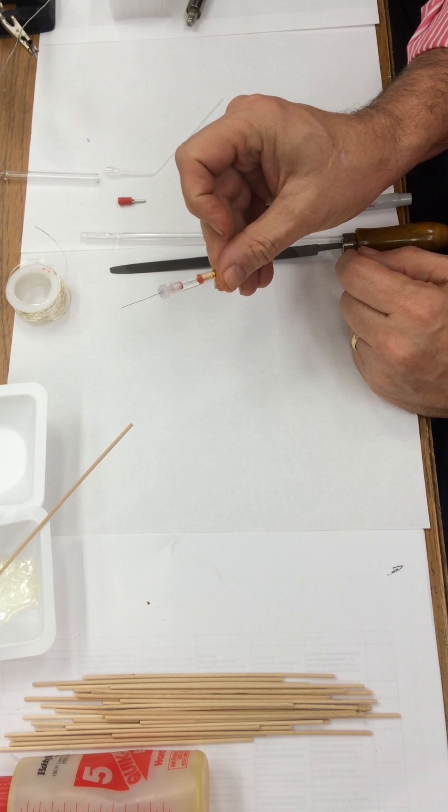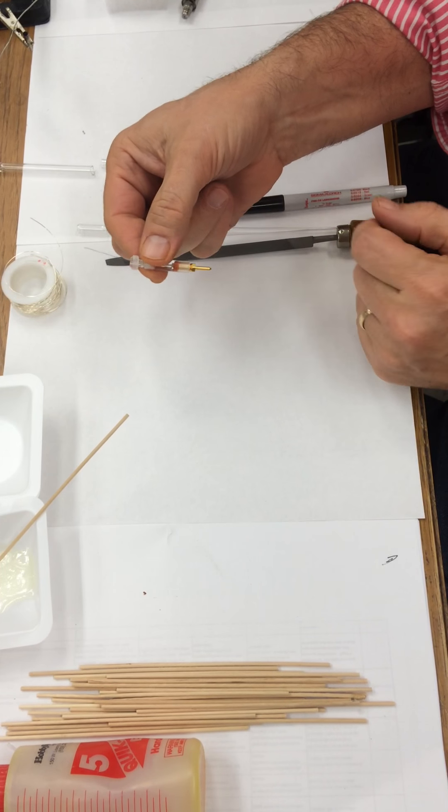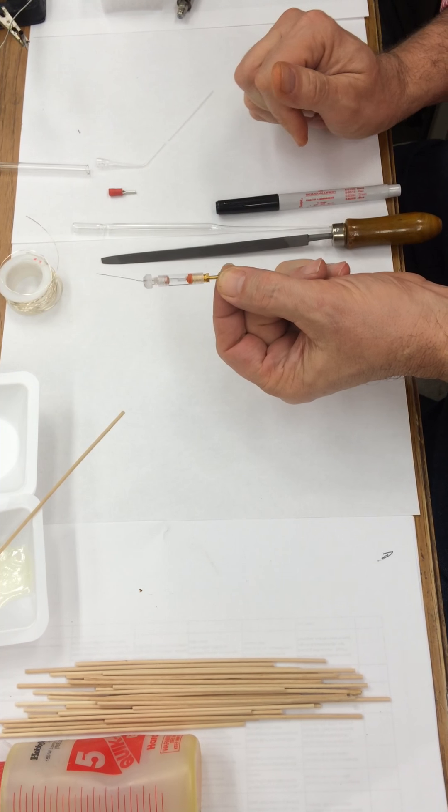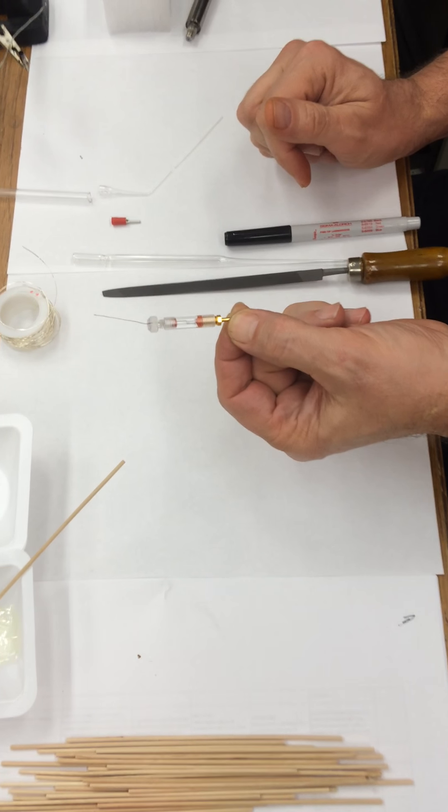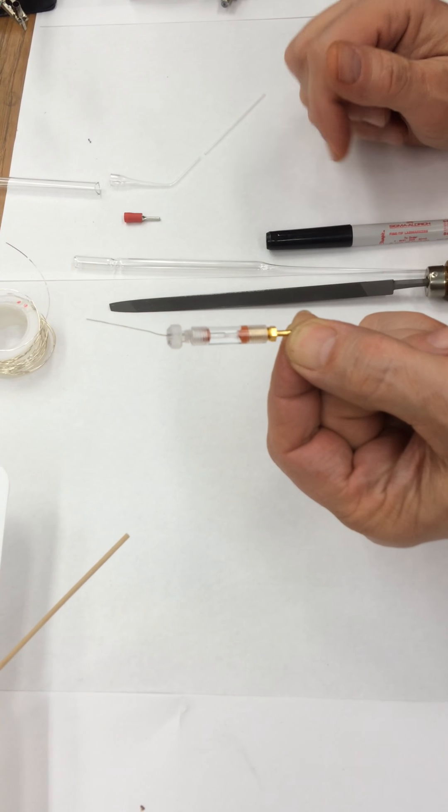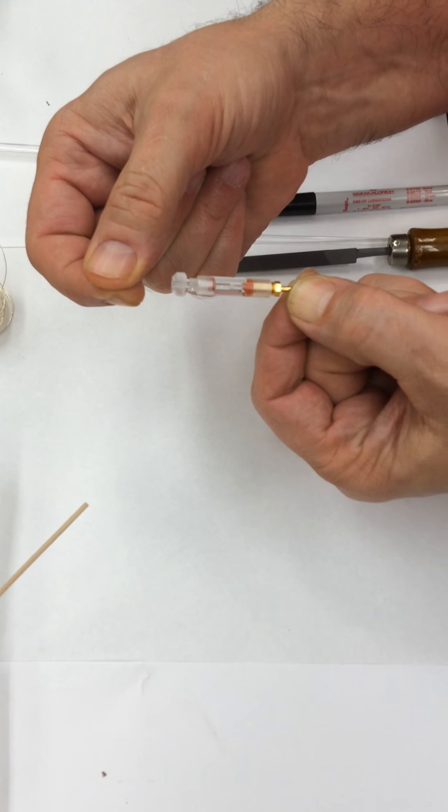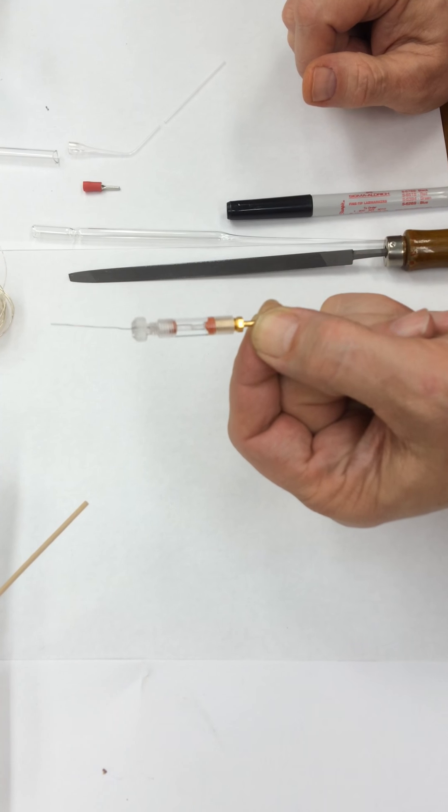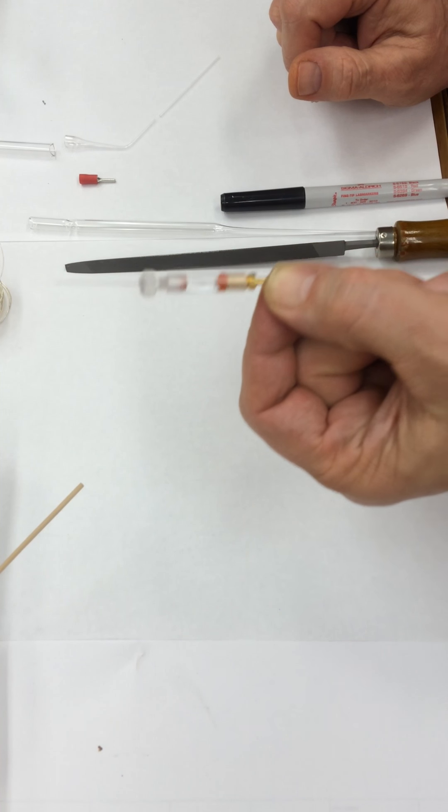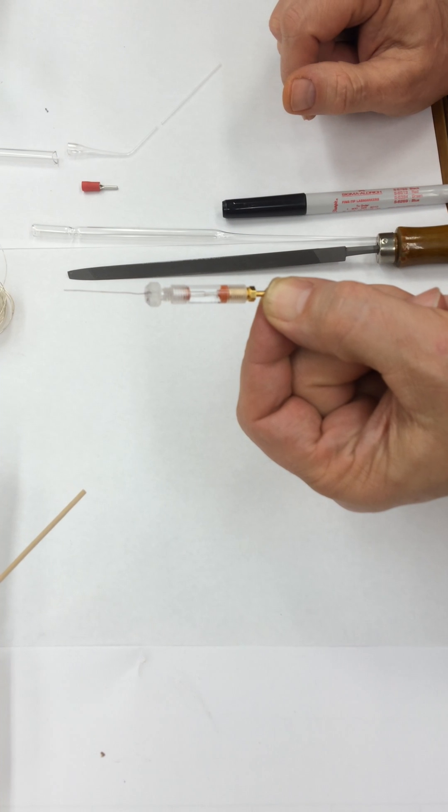These electrodes right here we use in the Bio 350 and Bio 446 neurophysiology class. You buy these from a company and it's just plastic with a little rubber stopper here and a silver wire on the inside. This costs $84 each.